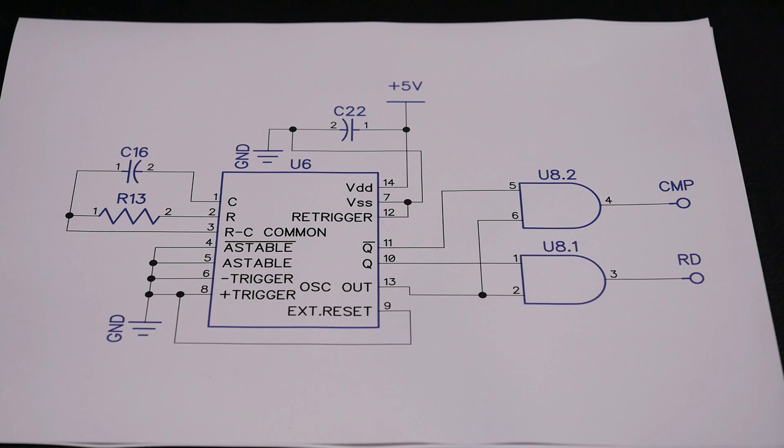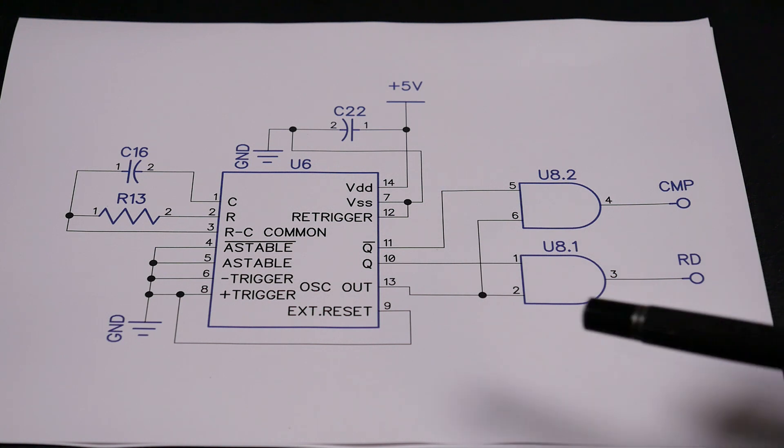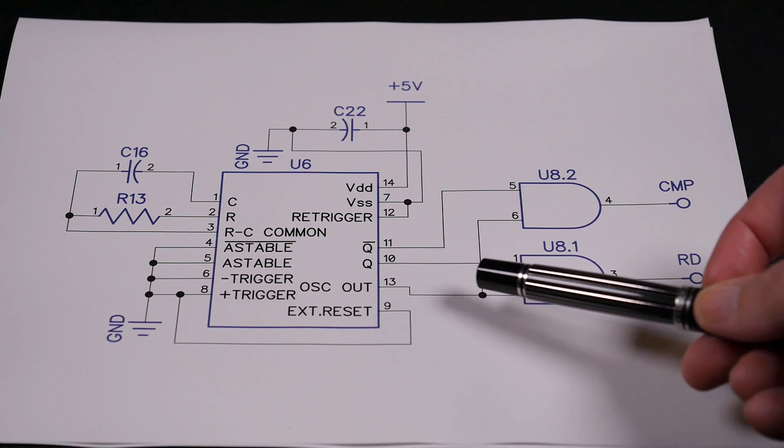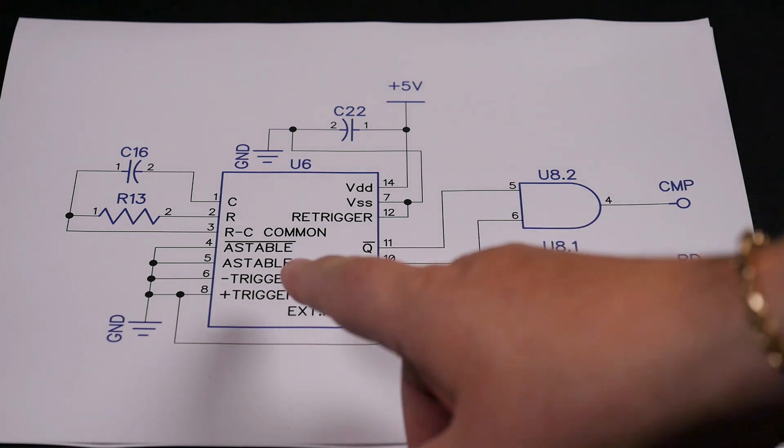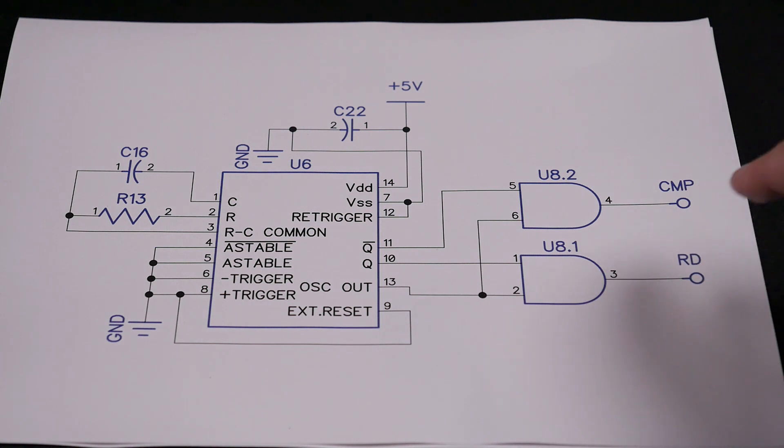So why does it glitch like that? Fundamentally the problem is that our oscillator out is slightly ahead of our main output. If we'd done this ourselves with a clock and our own flip-flop and divided the clock down in an external flip-flop, we would have realized that it's going to take some time for that flip-flop to change state. When it's all in one package like this, it's very easy to just think that it's all going to work together nicely, but that's not necessarily the case.